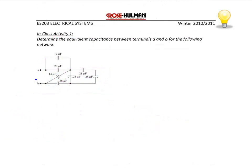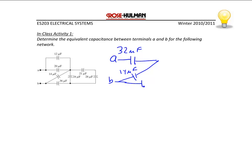Let's try another capacitance example. Here we have a network combination of capacitors, and we want to find the equivalent capacitance between terminals A and B. This is more complicated, so we'll work in stages from right to left. First, 12 µF is in parallel with 20 µF, which gives 32 µF. Copying down the 14 µF, 36 µF, and 24 µF. Next, 21 µF is in series with 28 µF; using the product over the sum, that becomes 12 µF.